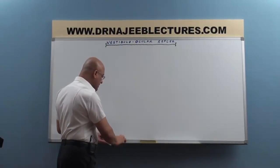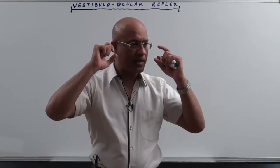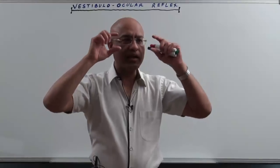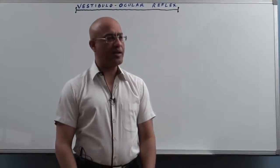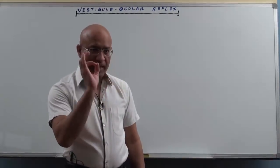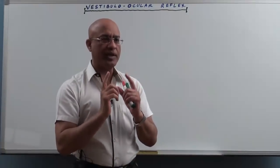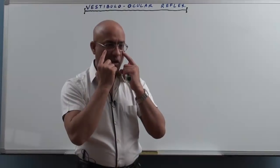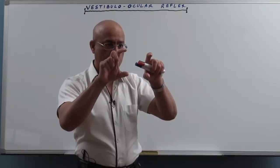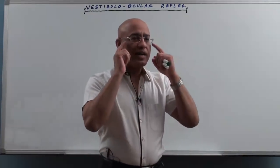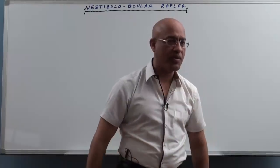Our eyes are like movie cameras, and the head is a platform on which they are mounted. Eyes only make a clear image when the image of the object falls on the fovea centralis on the retina. So it is very important that the image falls only on the retinal fovea.